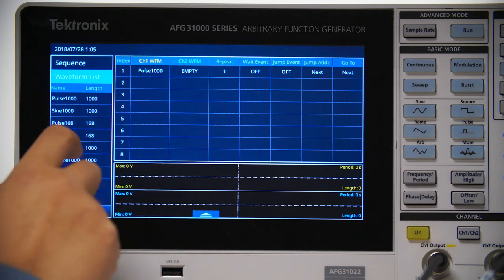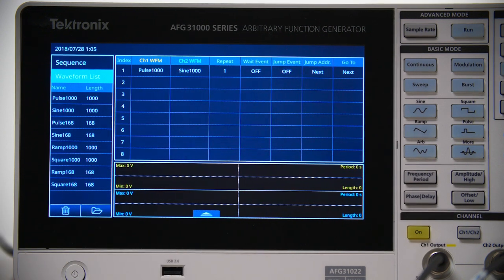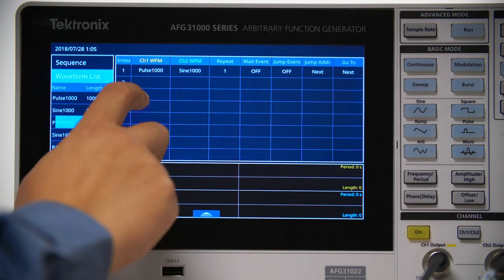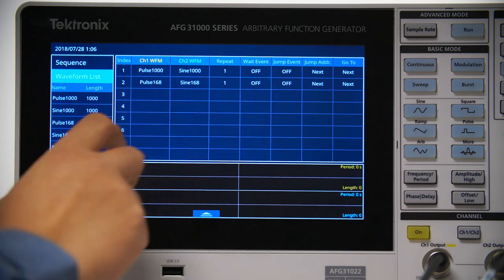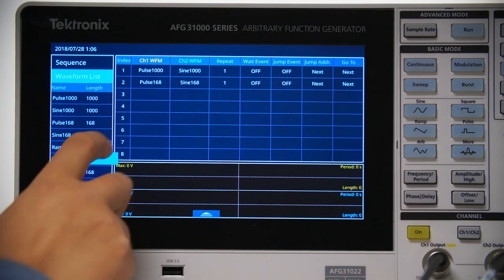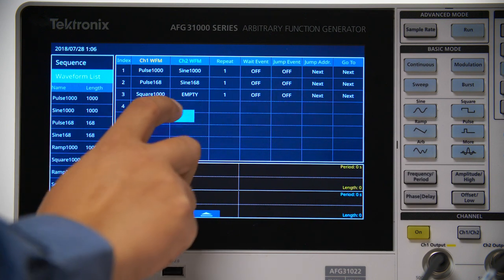Now you can drag and drop the waveforms from the list to the sequence, one by one. You can add whichever waveform you like into the sequence, but in each entry, the Channel 1 and Channel 2 waveforms must be of the same length or you'll run into warnings later.